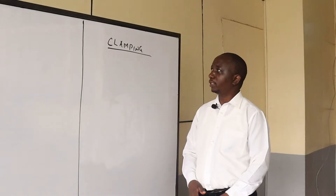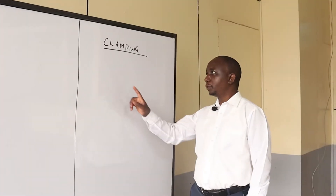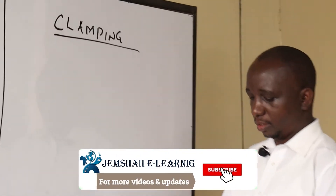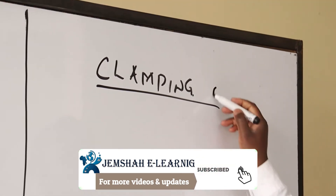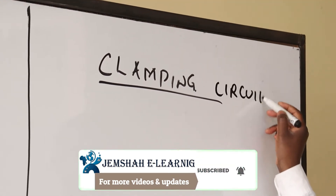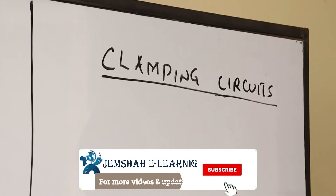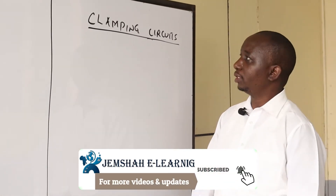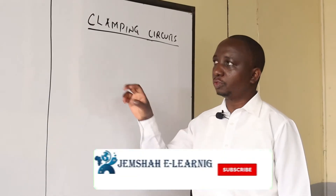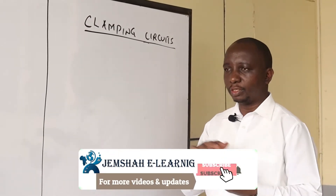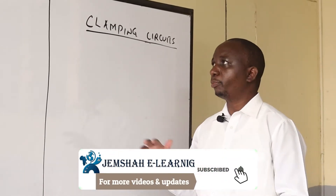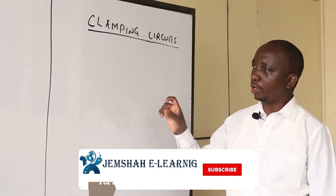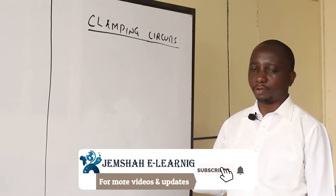Welcome to another session of Analog Electronics. Today we're going to be covering what I refer to as a clamping circuit. A clamping circuit is a circuit which functions mainly to shift the position of the waveform, while maintaining the particular shape of the waveform. So as much as it's going to be shifted, the waveform itself is not interfered with.